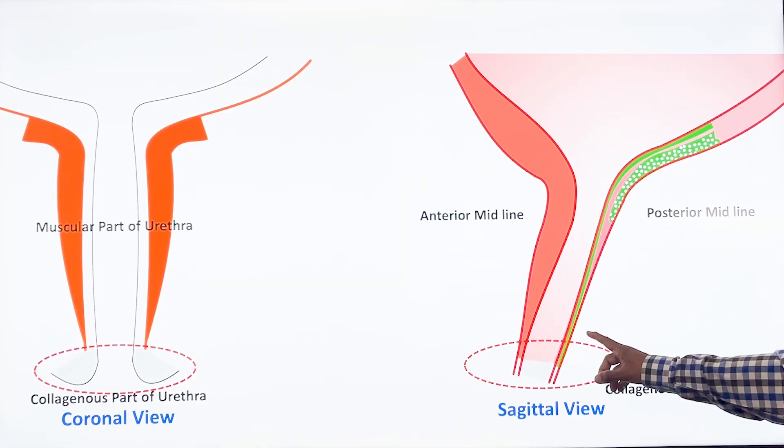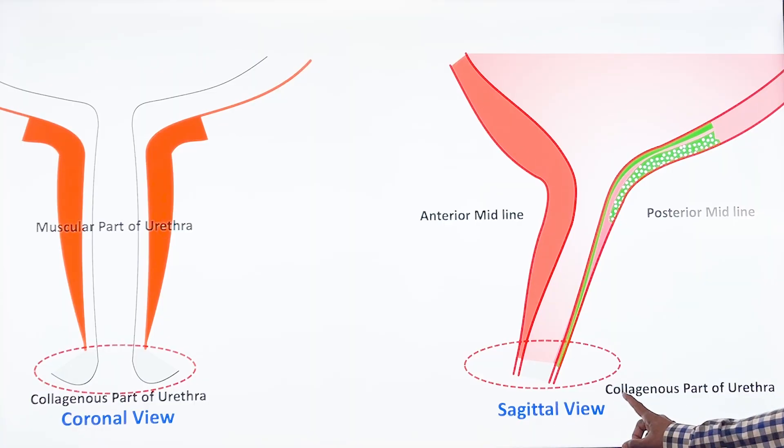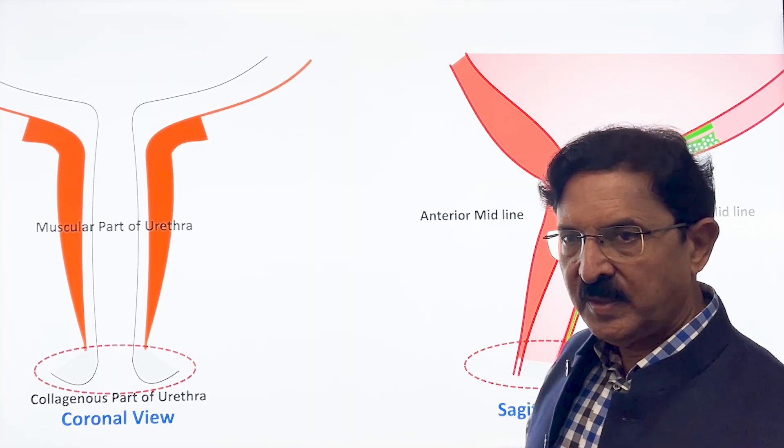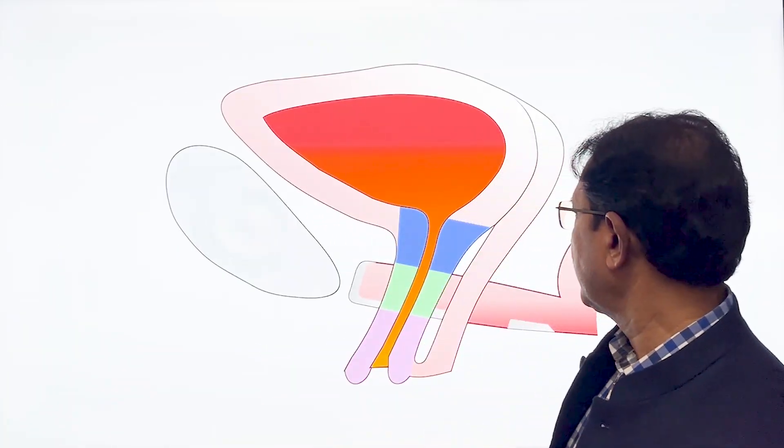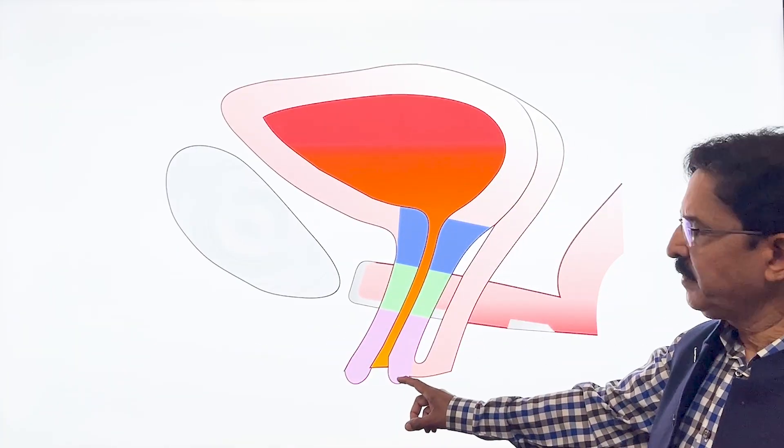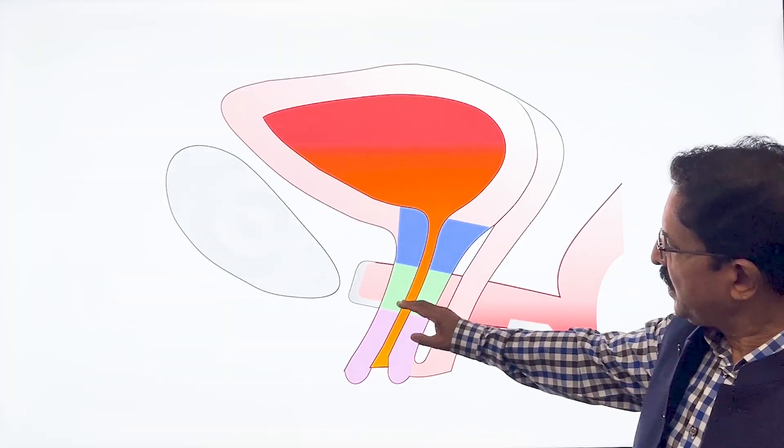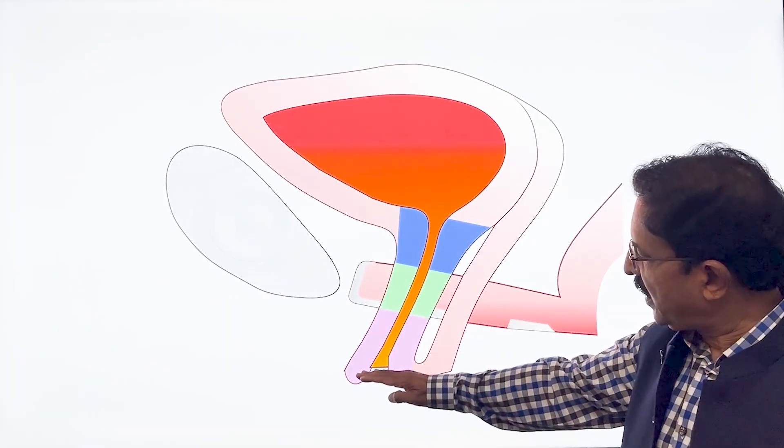Now in the sagittal view, this is where the collagenous part of the urethra lies and this is one to which we are referring as the distal urethra. If you recall this diagram, the distal urethra lies below the urogenital diaphragm.